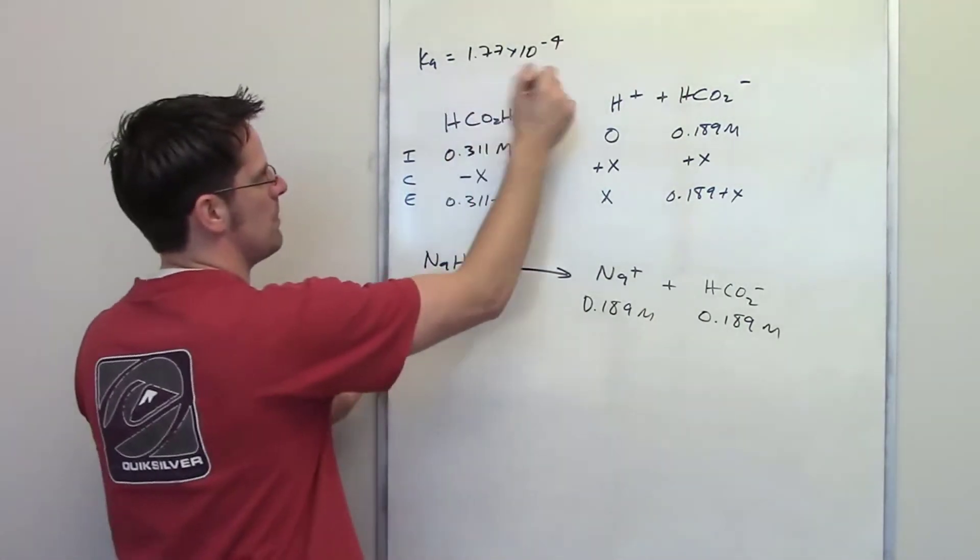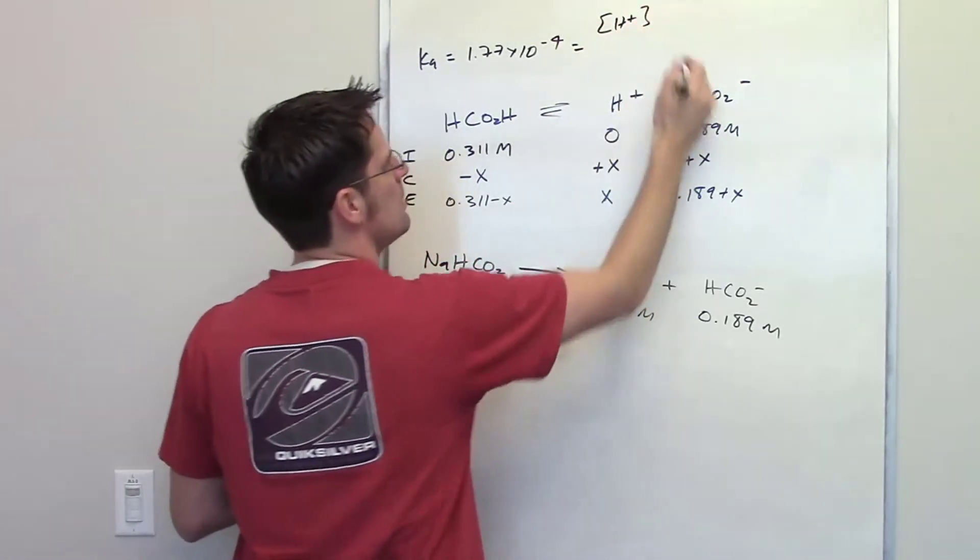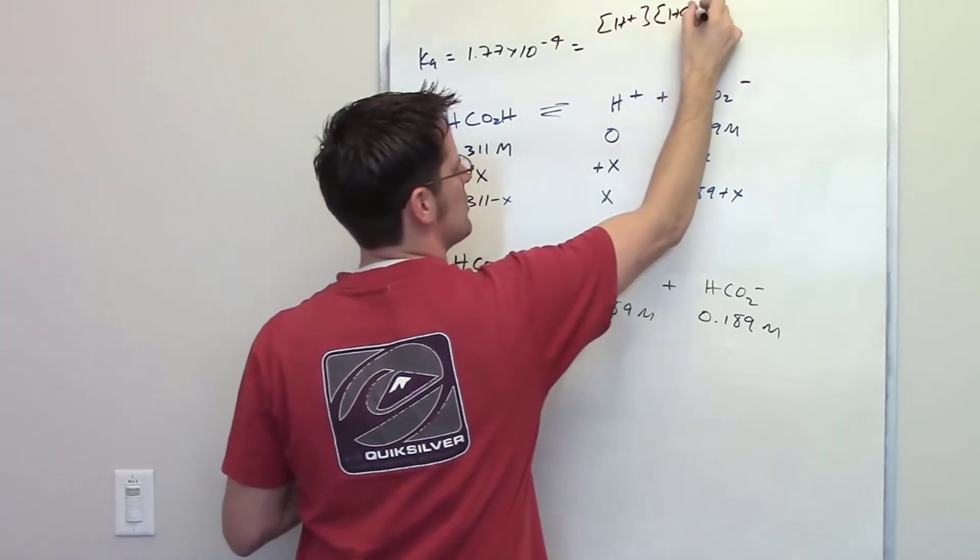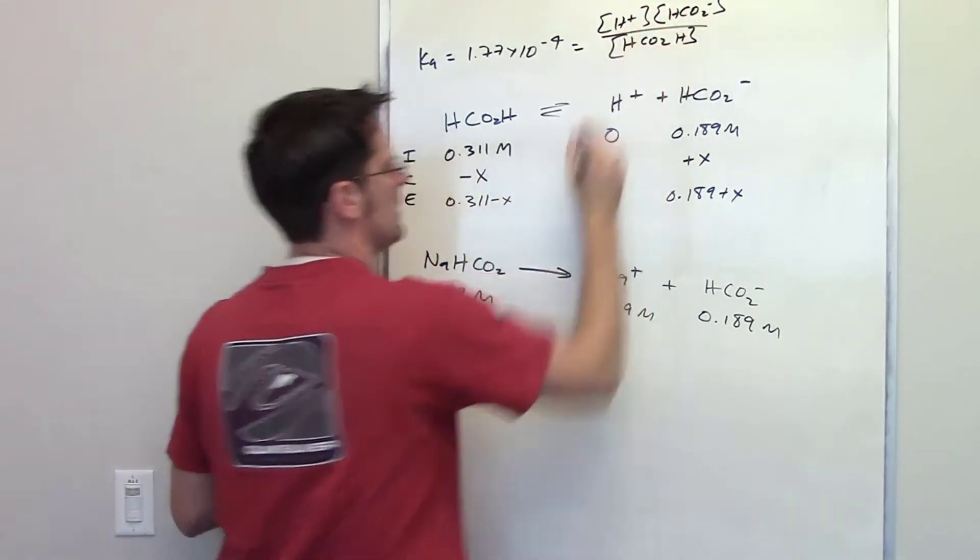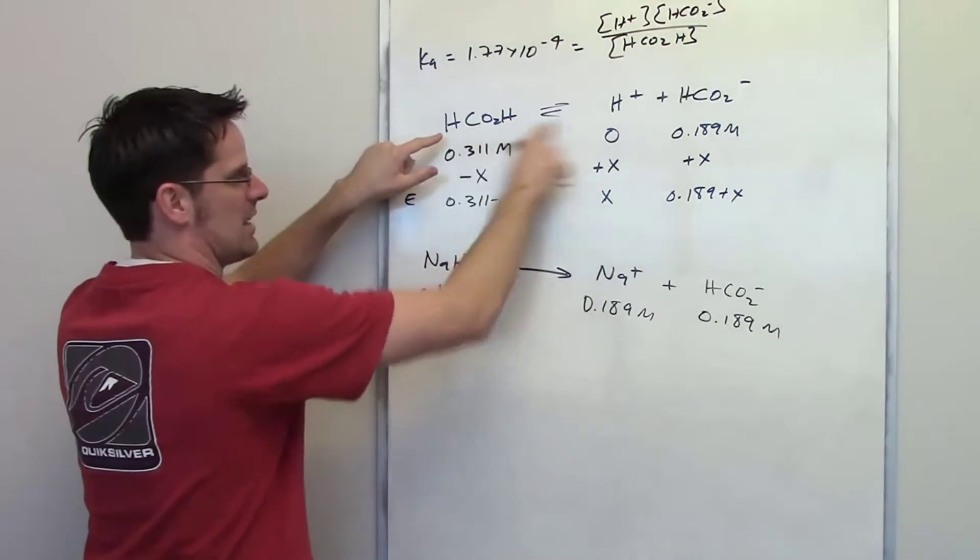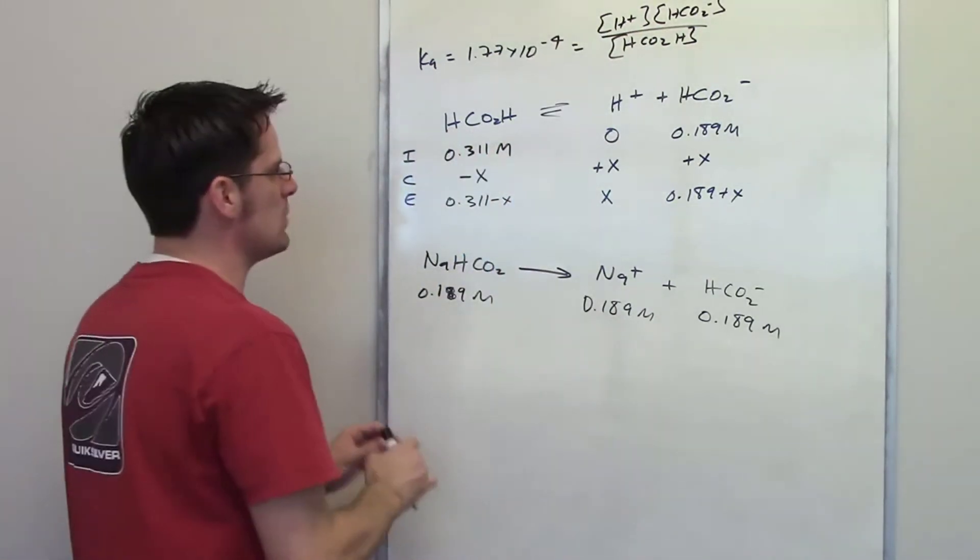Now Ka, which is given to me up here, is equal to the equilibrium concentration of H plus multiplied by the equilibrium concentration of formate divided by the equilibrium concentration of formic acid. That is the Ka expression for this equilibrium setting.